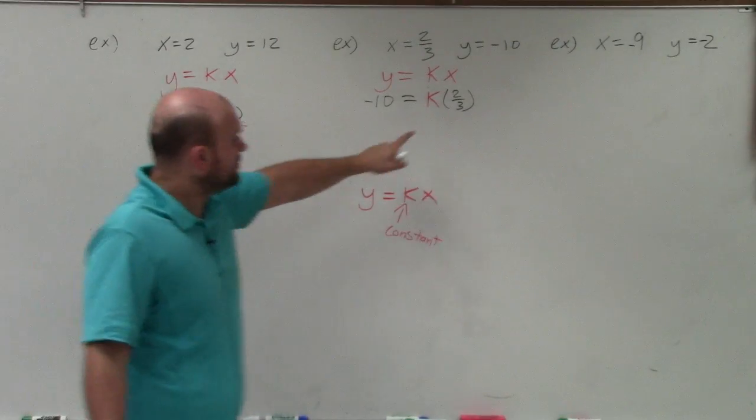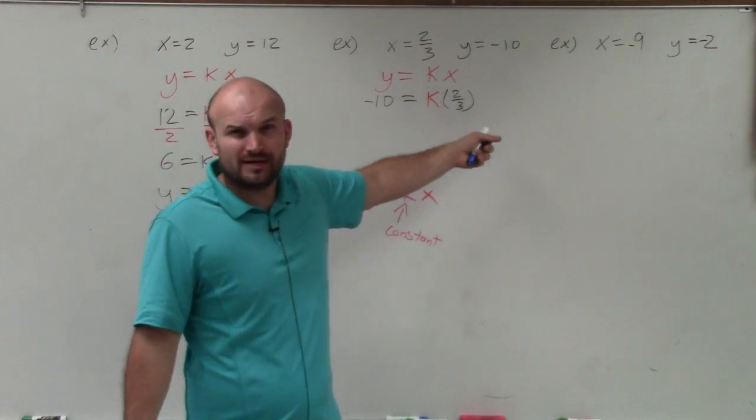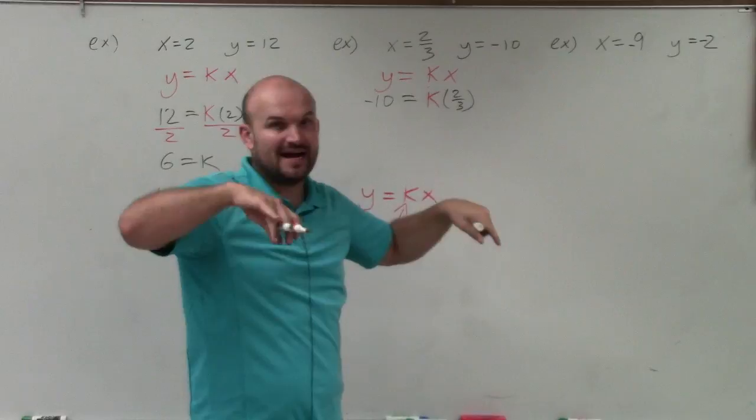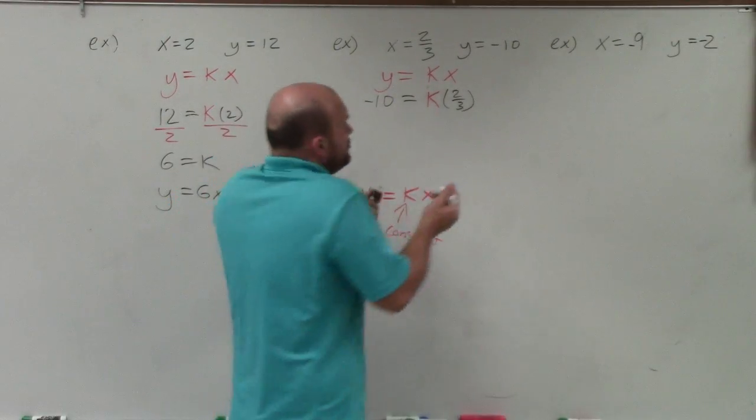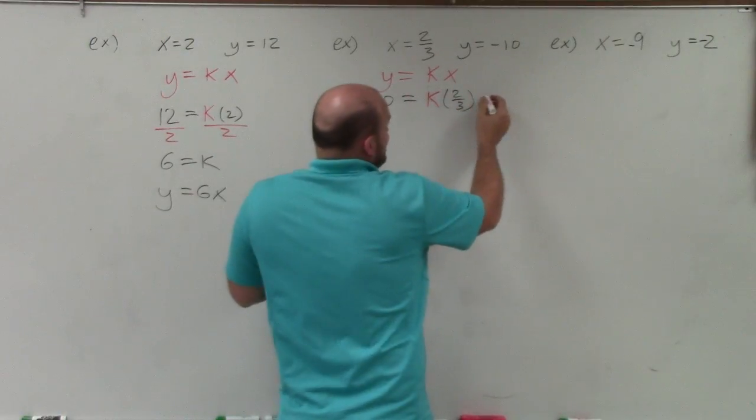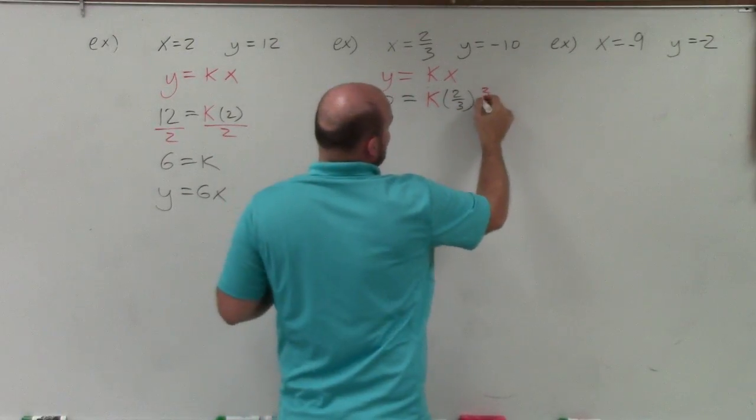And 1 times k is k. So really, I want the 2 thirds to be 1. So you can think of it as dividing, which would be multiplying by the reciprocal. Or just think any time you have a fraction or a number, to get it to be 1, you can always multiply by the reciprocal.